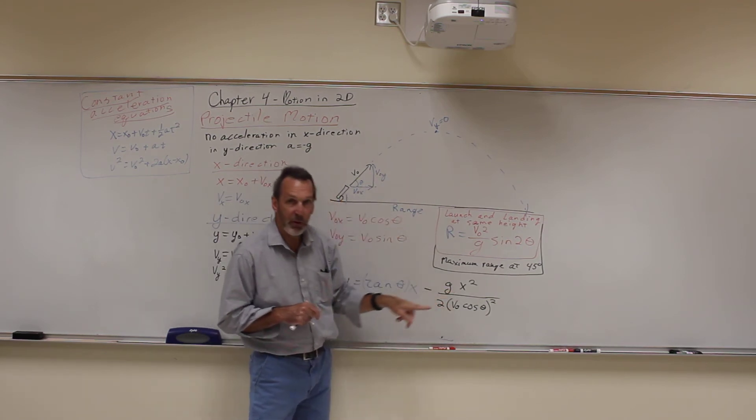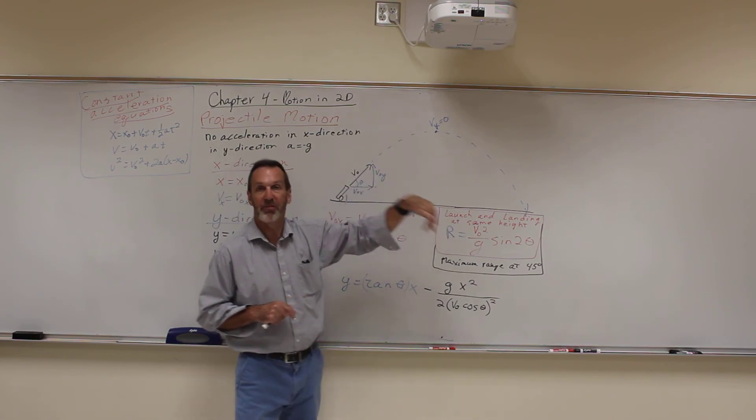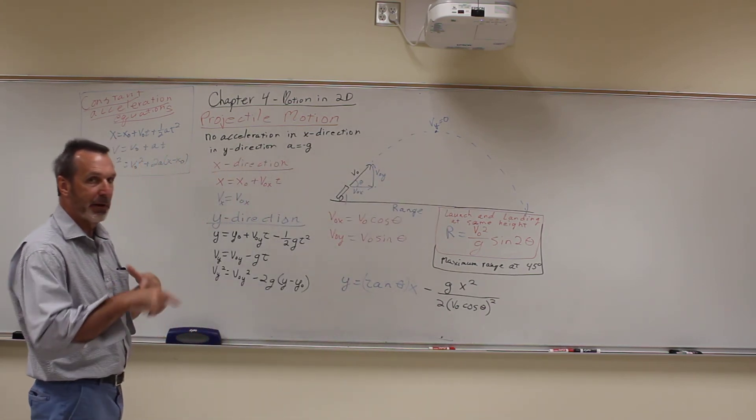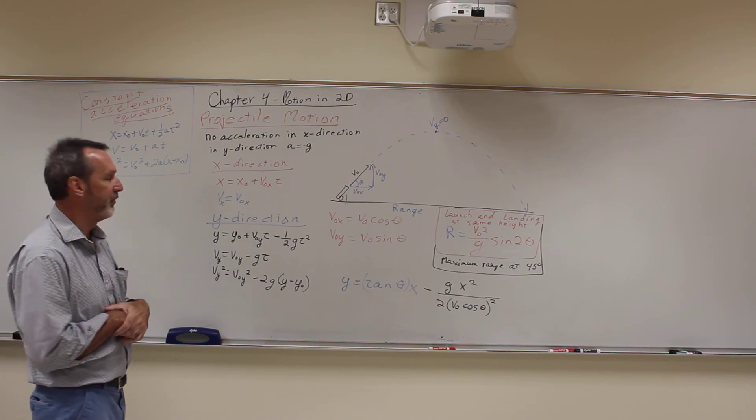And notice it's minus X squared. Minus X squared means the parabola opens downward, which is what we would expect. It's not open upward where everything you throw would fly off into space.